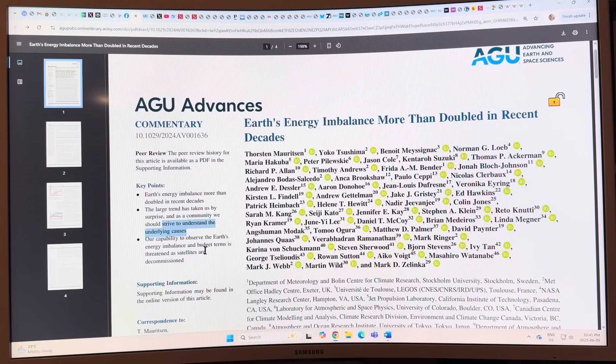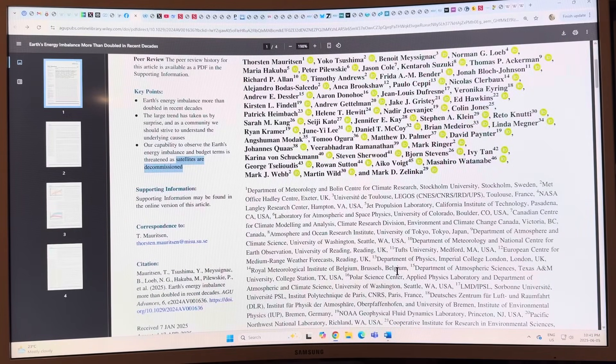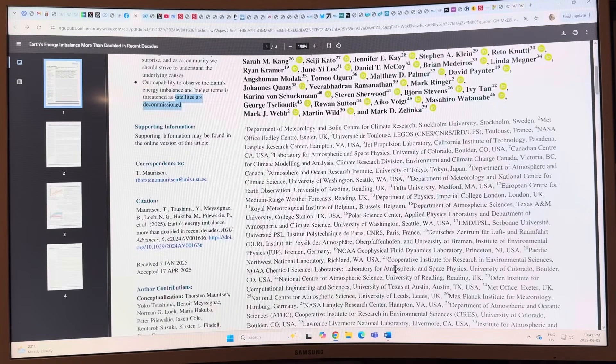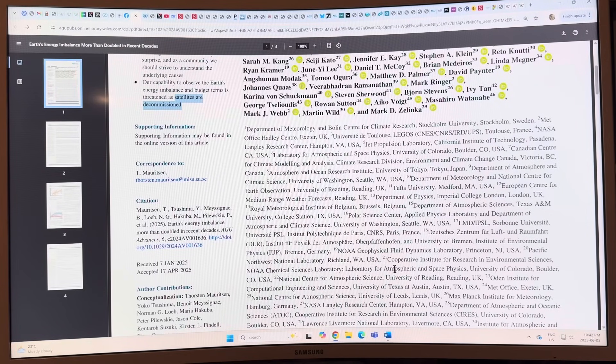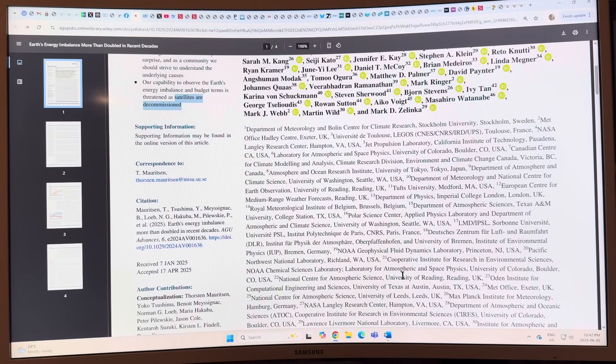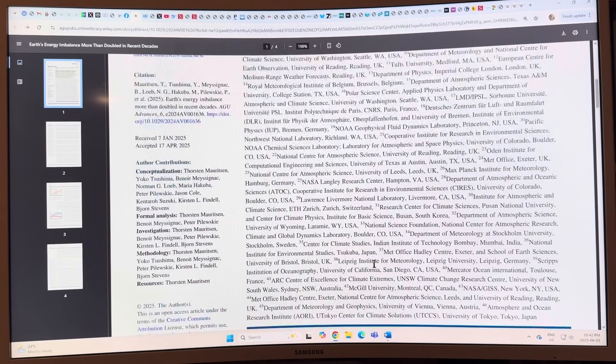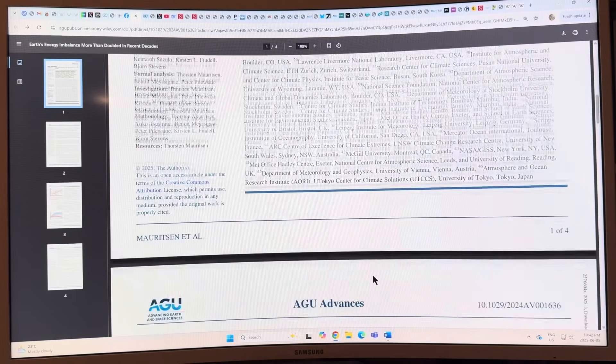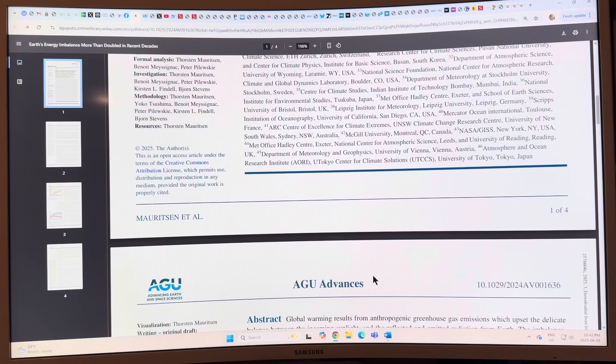All these people have been taken by surprise. As a community they should strive to understand the underlying causes. Our capability to observe the earth's energy imbalance in budget terms is threatened as satellites are decommissioned. This is a concern. We have sensors up on satellites in space. As these sensors go offline, we have to make sure we have a continuation of the work with updated sensors. Otherwise we'll know less and less about what's happening. That's like flying blind.